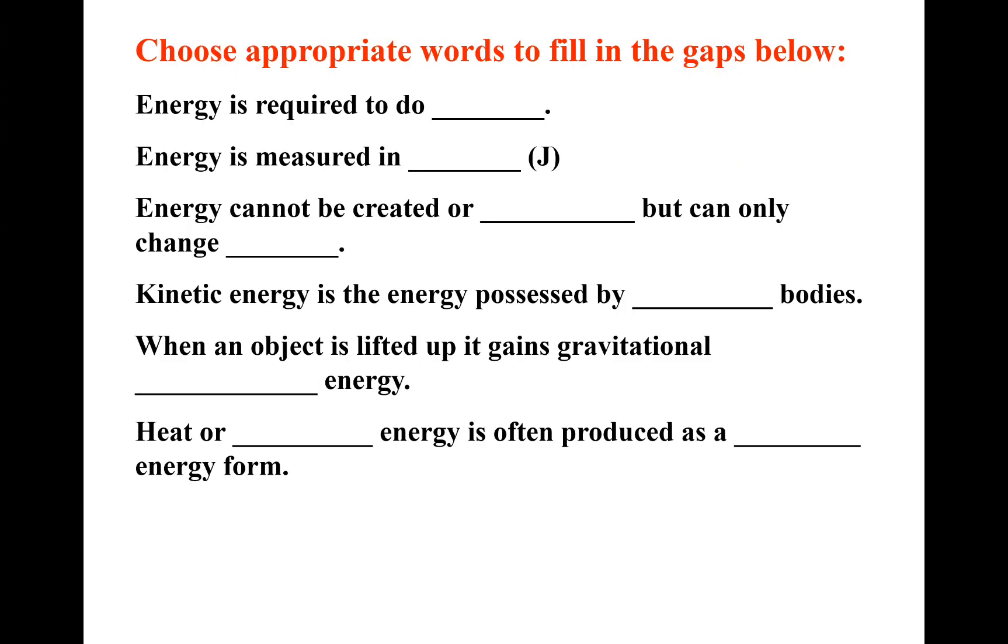Right, let's finish this then. If you want to pause and have a go. If you want the keywords, I'm going to put them on in a second. So energy is required to do work. Energy is measured in joules. Energy cannot be created or destroyed, but can only change form. Kinetic energy is the energy possessed by moving bodies. When an object is lifted up, it gains gravitational potential energy. Heat, or thermal energy, is often produced as a wasted energy form.